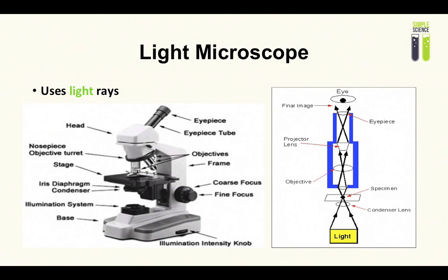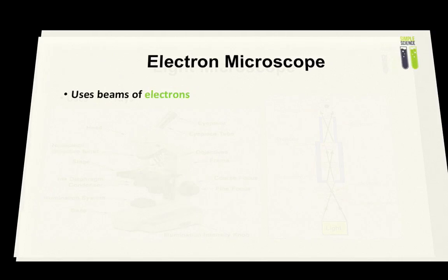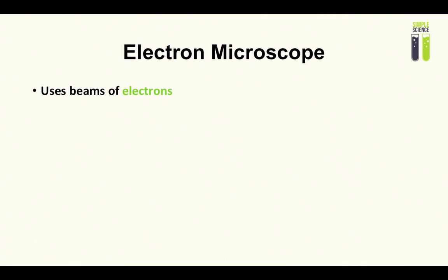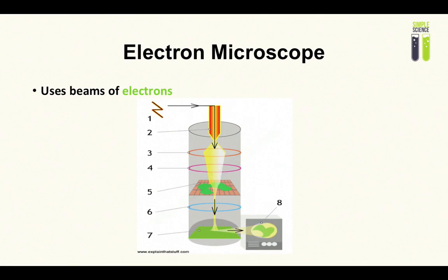Now we're going to move on to the second type of microscope which is known as the electron microscope. I wonder if you could guess - it uses electrons. So instead of using light it uses electrons, and an electron micrograph is just an image which is produced by an electron microscope. This isn't actually an electron microscope, it's just a simplified diagram for me to try to explain roughly how it works.